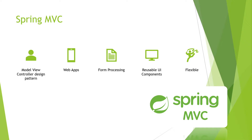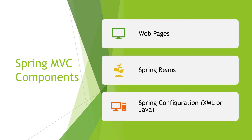Now let's move on to Spring MVC. Spring MVC is a Model-View-Controller design pattern, mostly used for web apps and form processing. It has reusable UI components and it's really flexible. Which are the components of Spring MVC? Spring MVC consists of web pages — we haven't talked about those so far. And it consists of spring beans and spring configuration — we already know what those are.